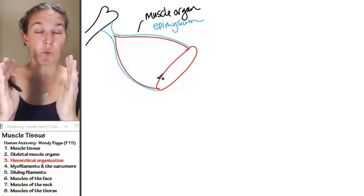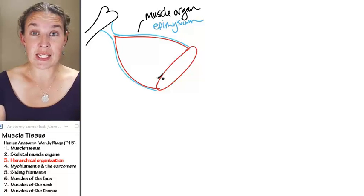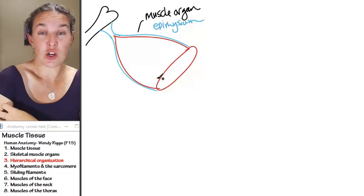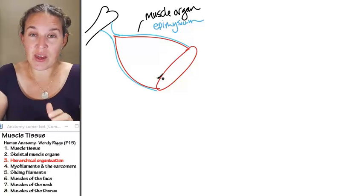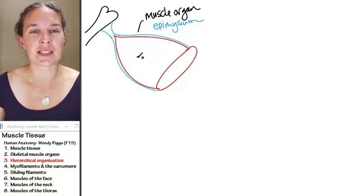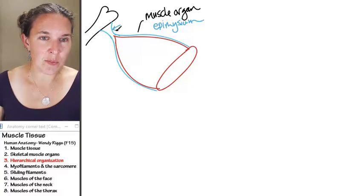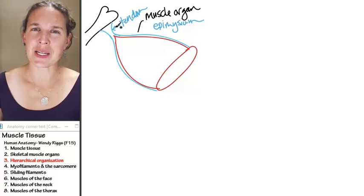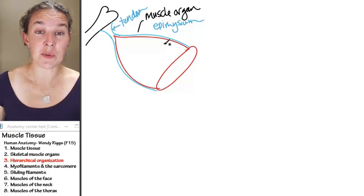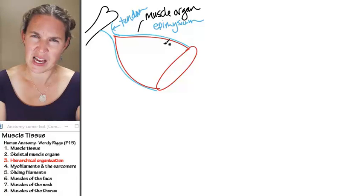Epimysium surrounds the entire muscle organ. When we go in and look at our bodies, we can actually grab an entire muscle organ and the connective tissue that covers it, that's the epimysium. This is not on accident. It's on purpose that you notice that the epimysium is the same color as my tendon. And that's because the epimysium is a structure that eventually becomes tendon. It's what actually connects to the bone organ itself.